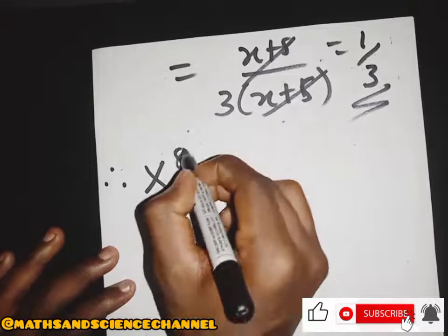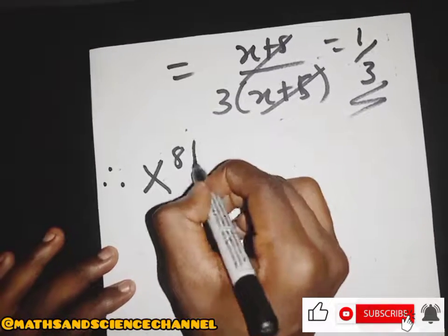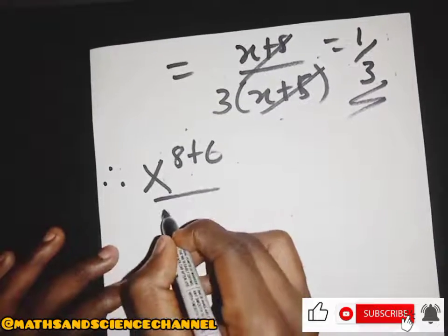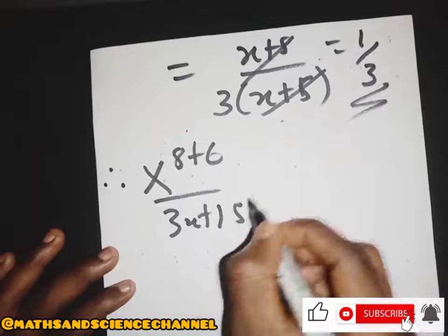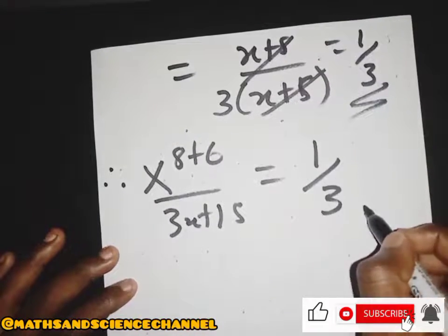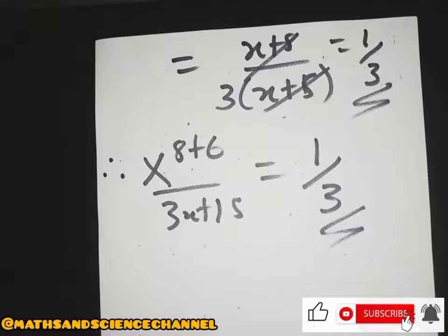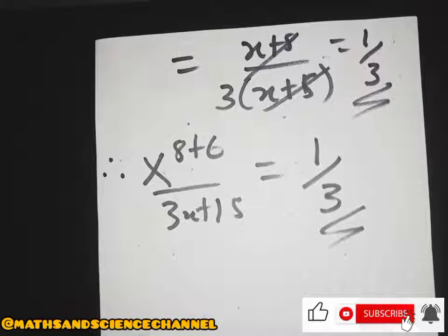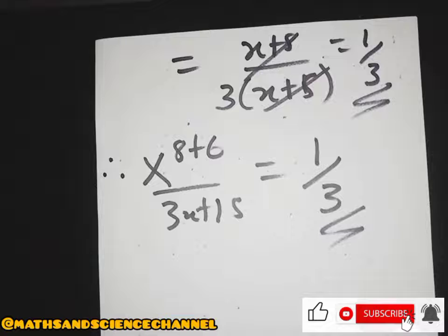Therefore, s to the power of 8 plus 6 divided by 3s plus 15 equals 1 over 3 — that is the answer. Thank you very much for joining me in this session. I hope it was helpful. If you are new here, please like, subscribe, and hit the notification bell to be notified whenever we post a new video. Thank you very much, and I will see you in another session.